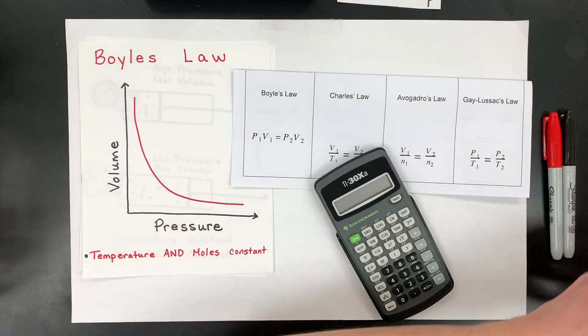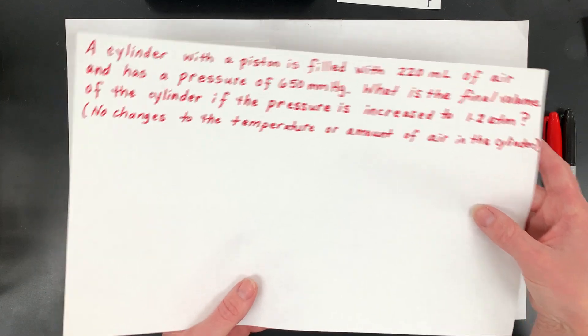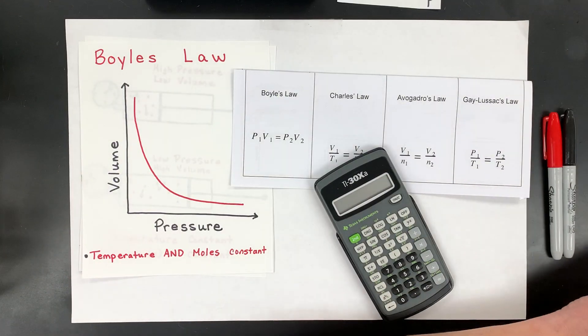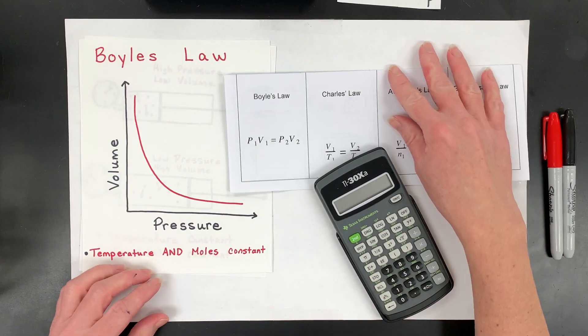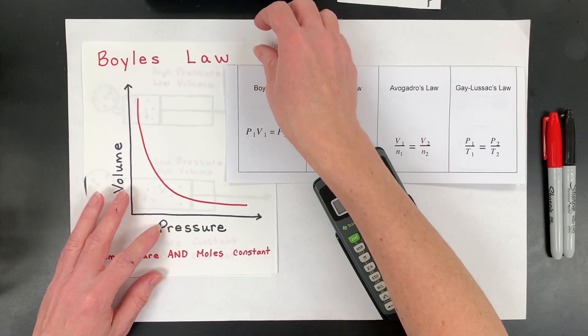One like this, and then another one that you're going to try, which is this one. So let's go through the graph, the particulate view, and the model first, and then we'll do the sample problems.